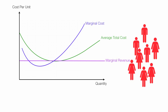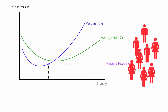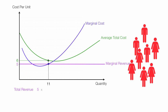If people keep entering the market, prices are forced down even more — in this case all the way down to a quantity of 11, a price of 5, and a cost of 6. In this case there's a loss: cost per unit is greater than price per unit, shown by the red rectangle. Total revenue is 5 times 11, which equals 55. Total cost is 6 times 11, which is 66. So the supplier loses 11 — a total economic loss of 11. But they're still covering their opportunity cost and day-to-day expenses.